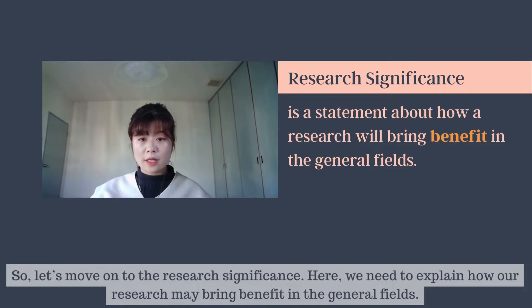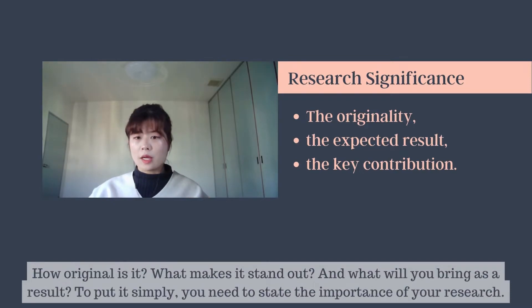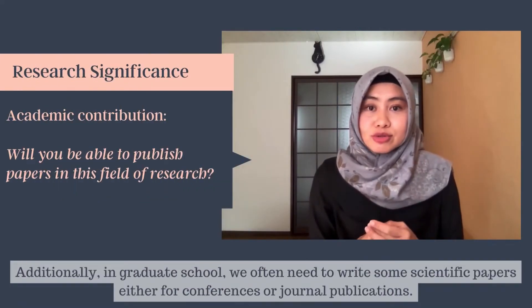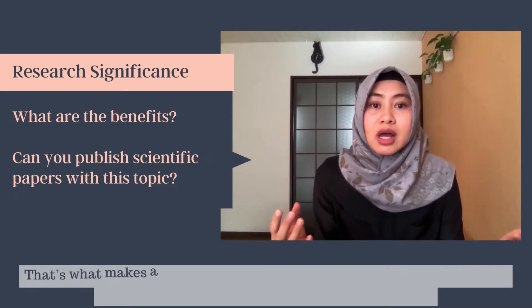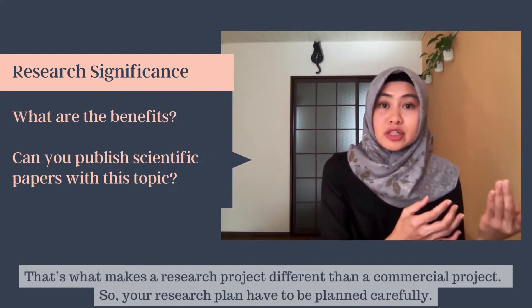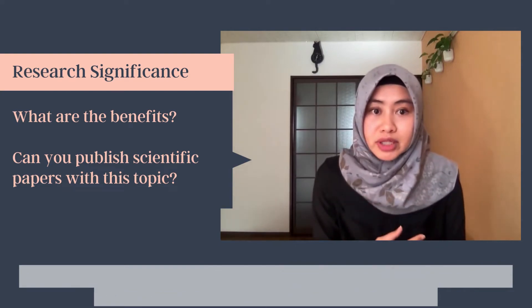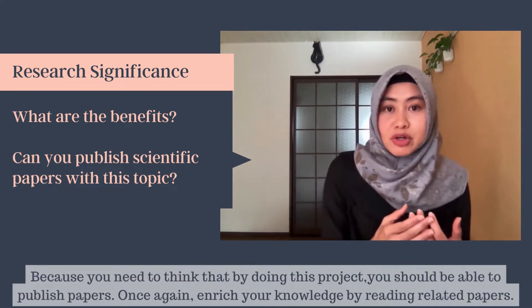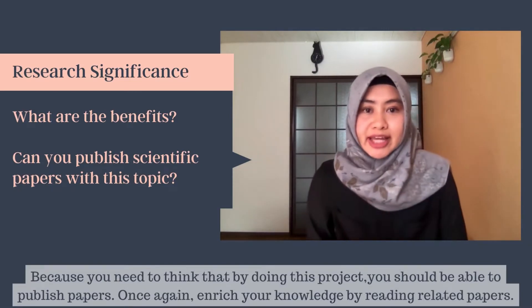So let's move on to the research significance. Here, we need to explain how our research may bring benefit in the general view. How original is it? What makes it stand out? And what will you bring as a result? To put it simply, you need to state the importance of your research. Additionally, in grad school, we often need to write scientific papers either for conferences or journal publications. That's what makes a research project different from a commercial project. Your research has to be planned carefully, because by doing this project you should be able to publish papers and reach new knowledge by reading related papers.